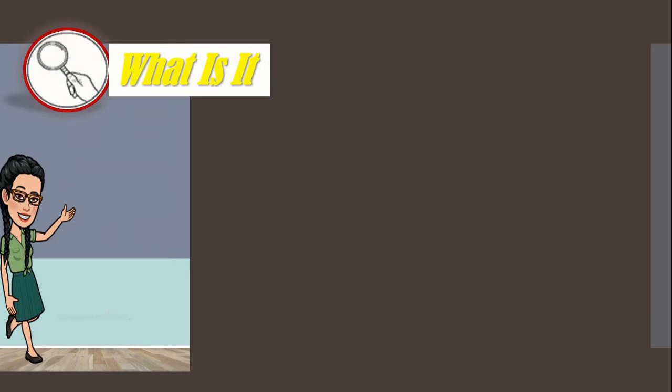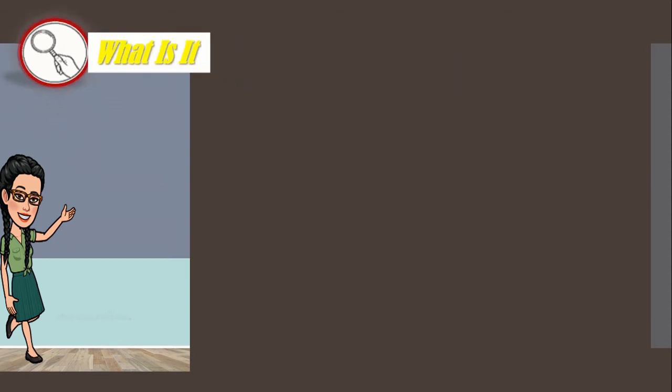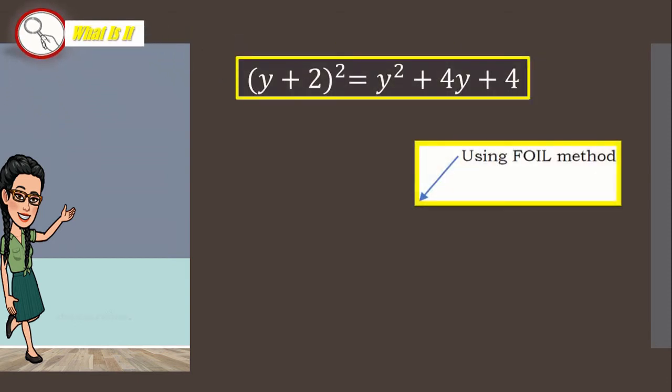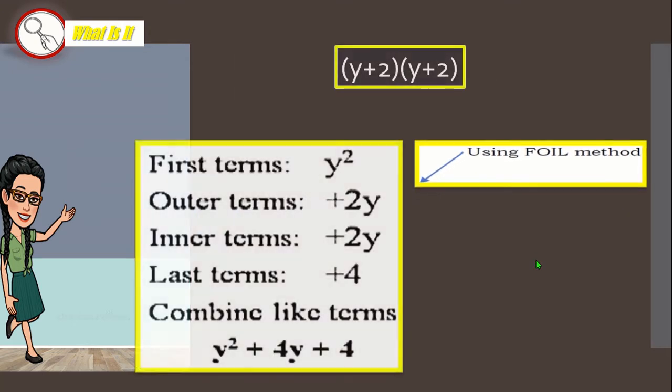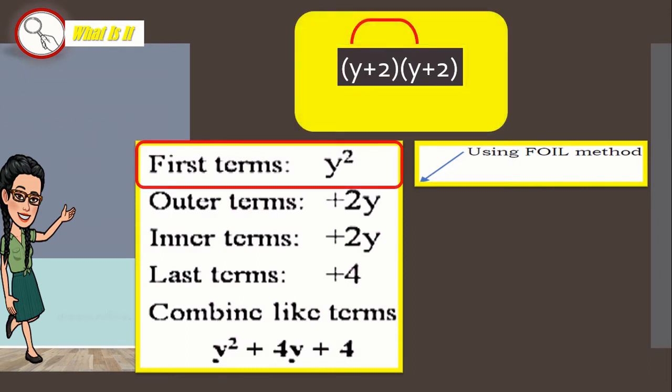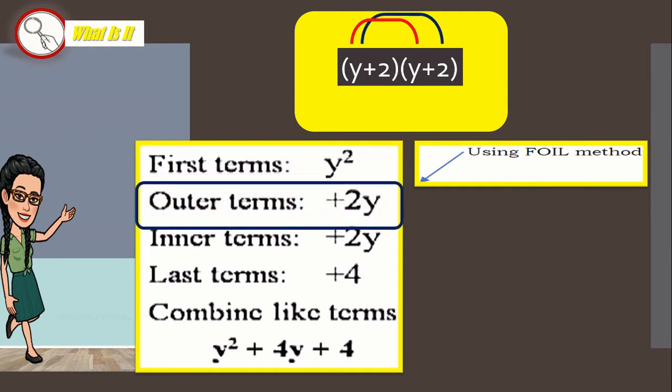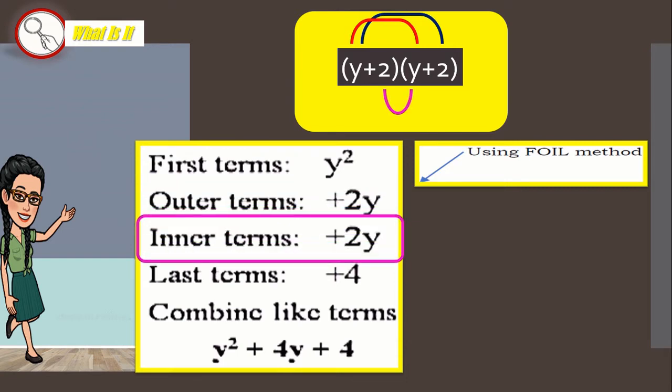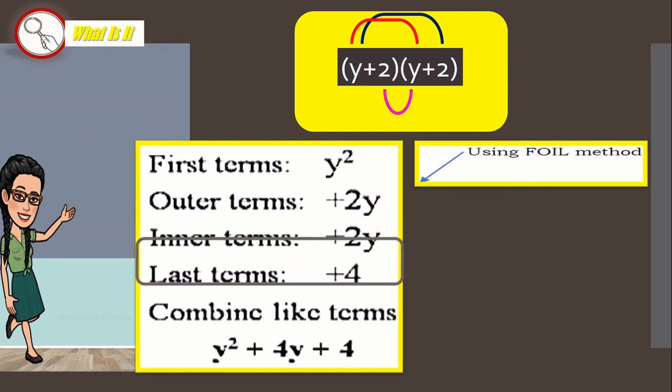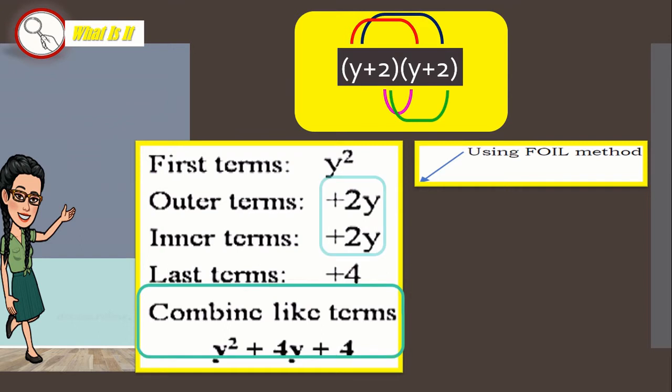So, what is it? You have learned that the quantity of y plus 2 squared is equal to y squared plus 4y plus 4 by FOIL method. Here it is. FOIL method. First term, y times y is equal to y squared. Outer terms, y times 2 is 2y. Inner terms, 2 times y is 2y. And, last terms, 2 times 2 is 4. Combining like terms, y squared plus 4y plus 4.